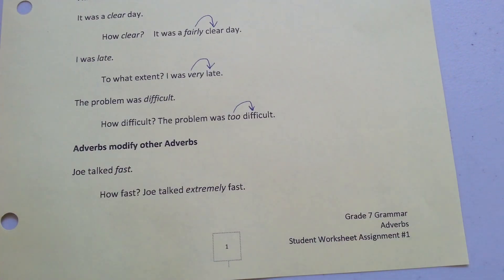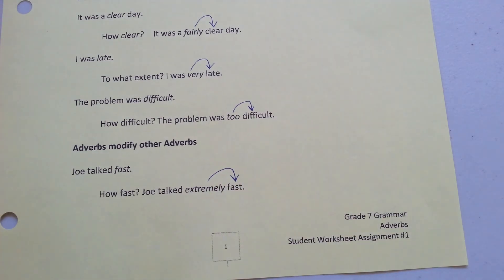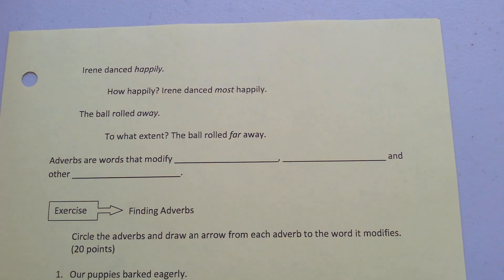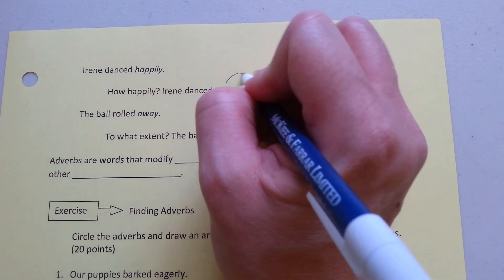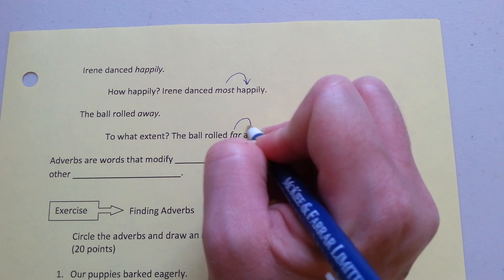Now, adverbs modify other adverbs. Joel talked fast — how fast? Joel talked extremely fast. Here are a couple more examples. Irene danced happily — Irene danced most happily. The ball rolled away — to what extent? The ball rolled far away.